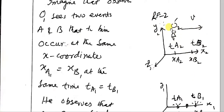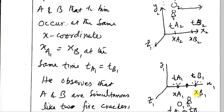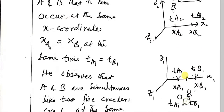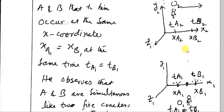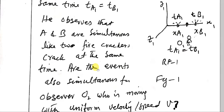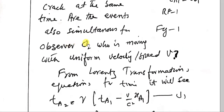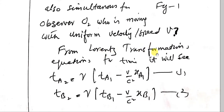This frame of reference is moving with uniform velocity v. When these two events are observed by observer O2, will they also appear simultaneous? Will it be the same for both O1 and O2? Now for observer O2, who is moving with velocity v, we use the Lorentz transformation equation for time.